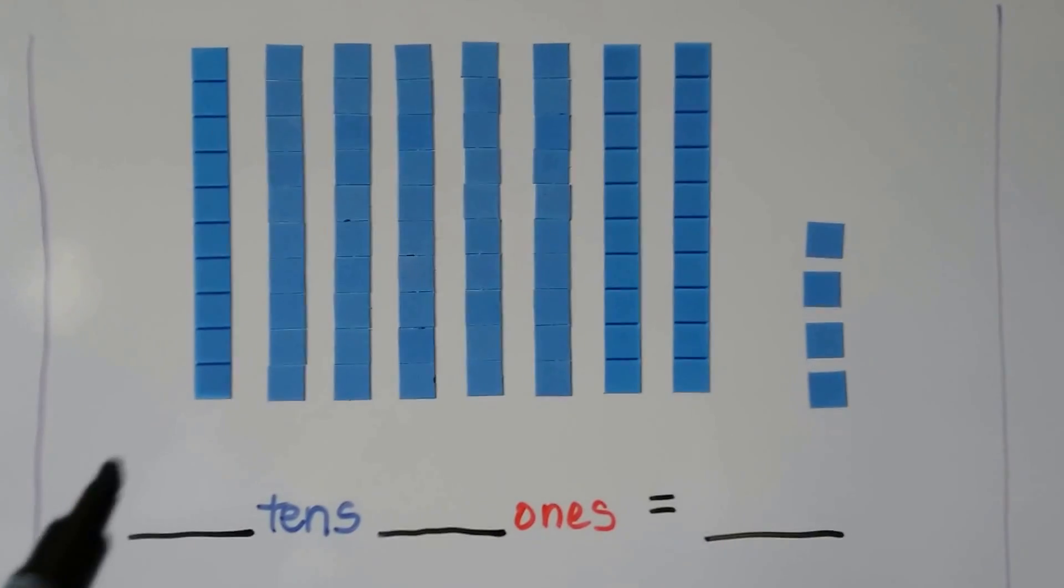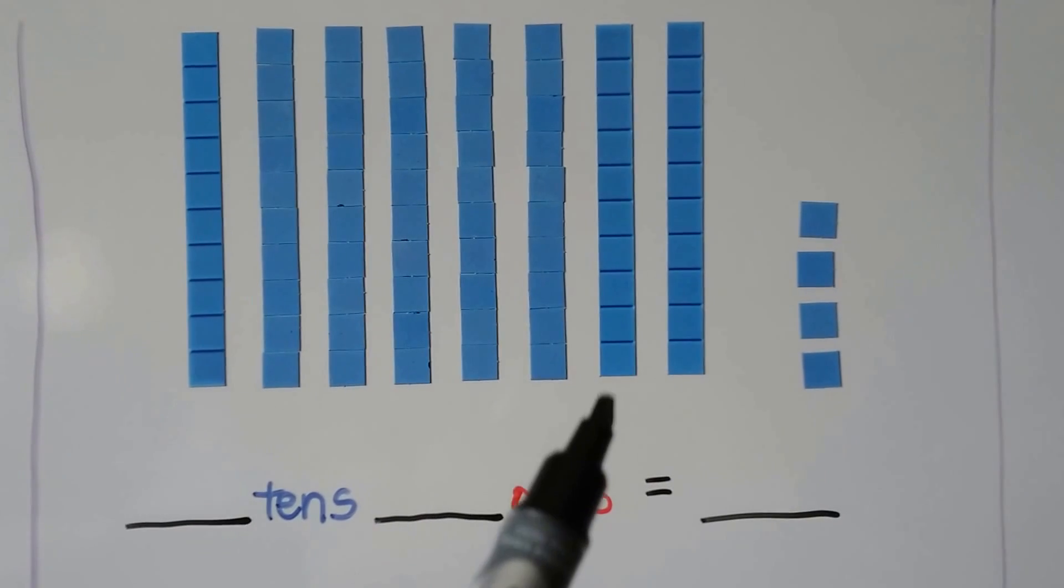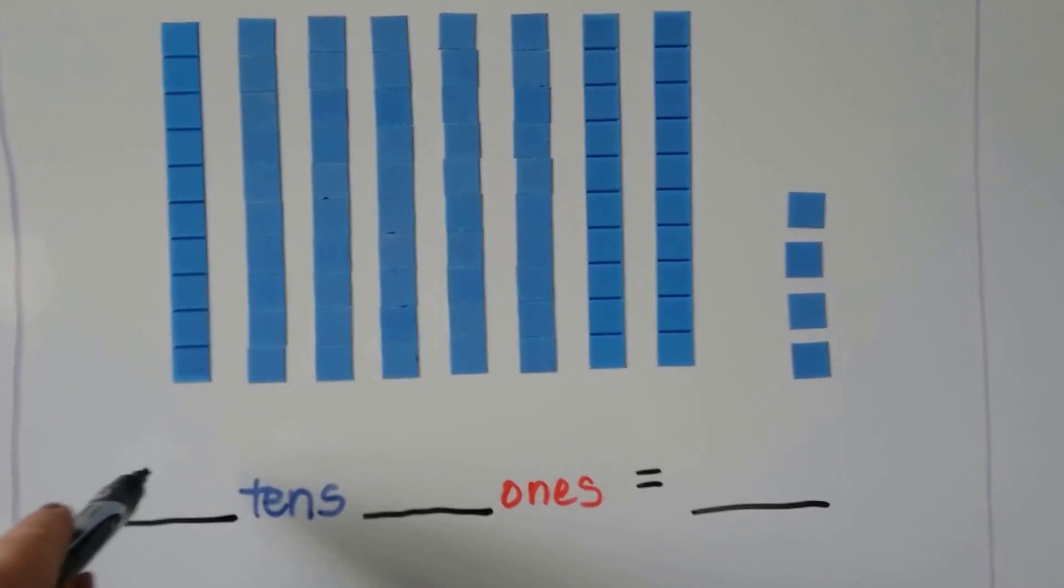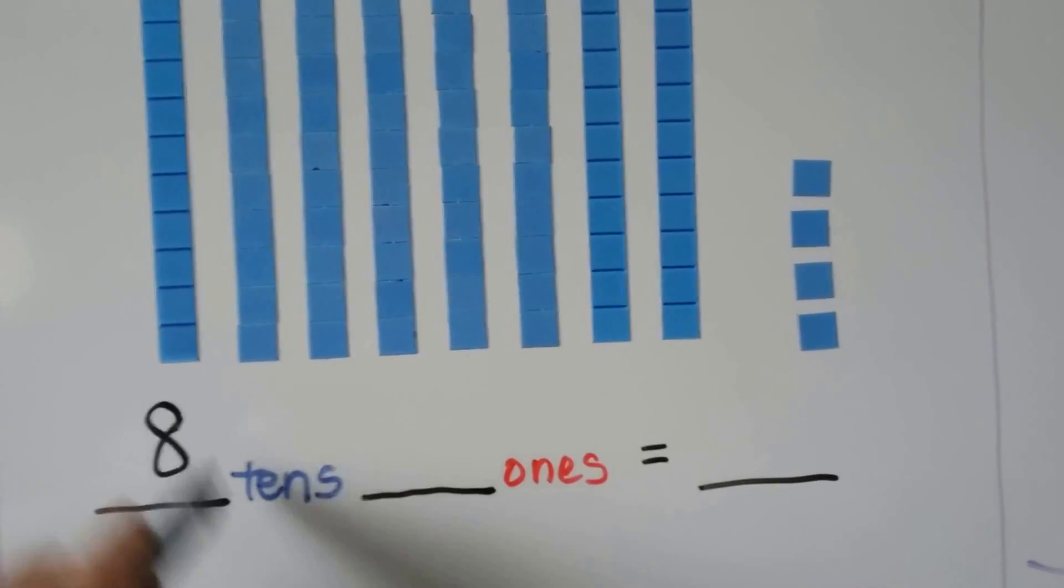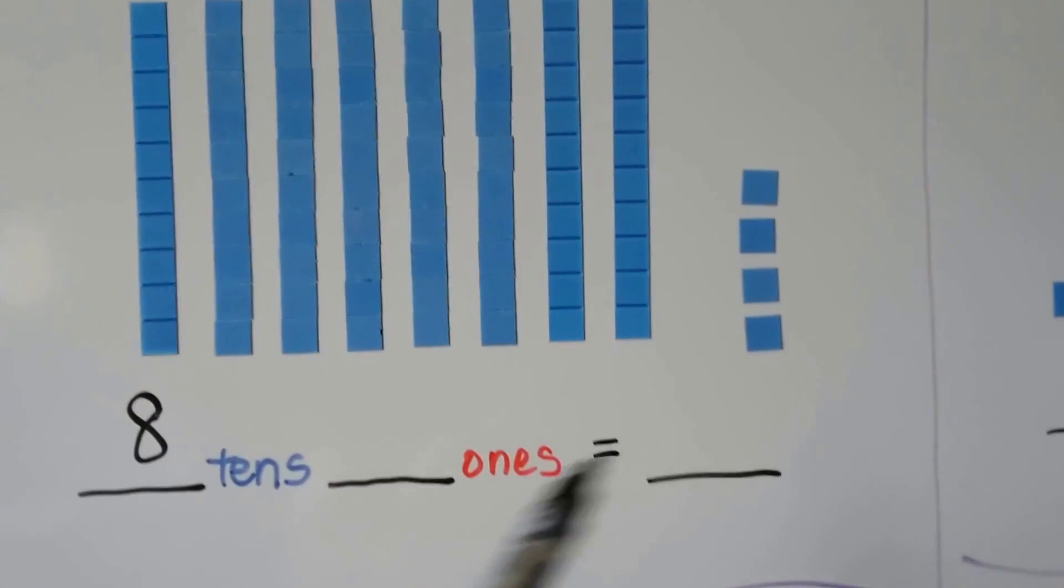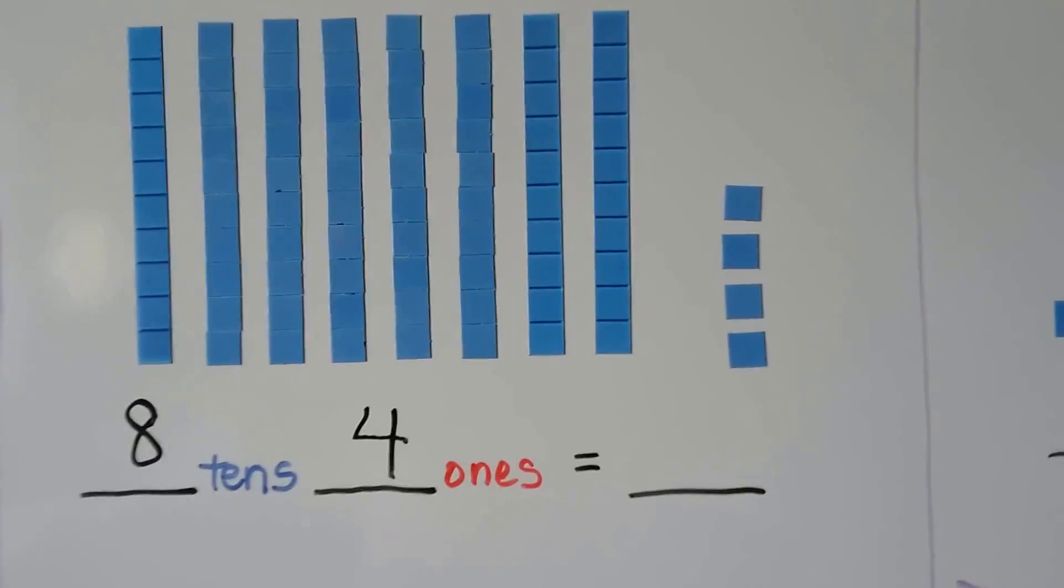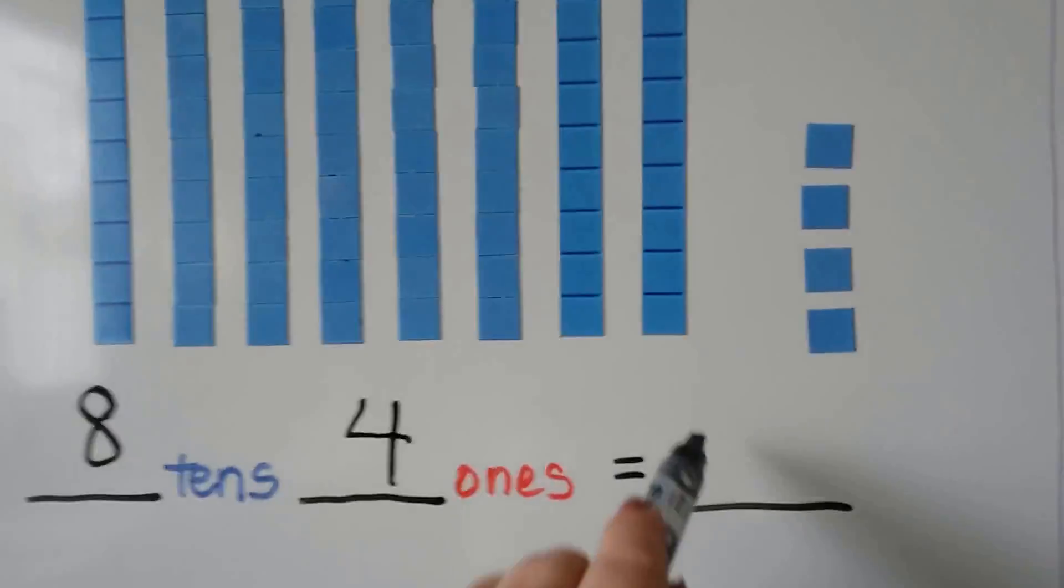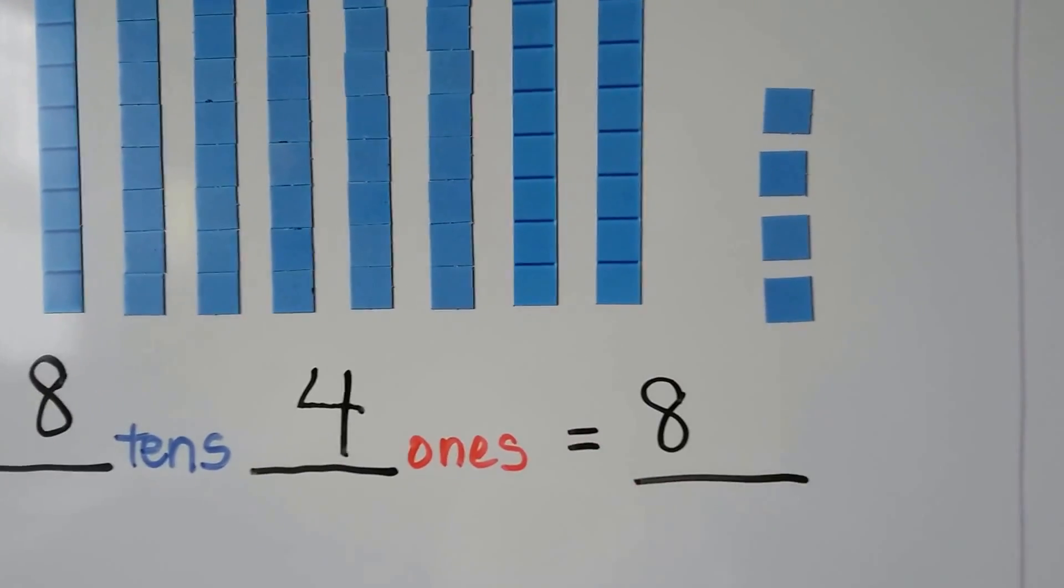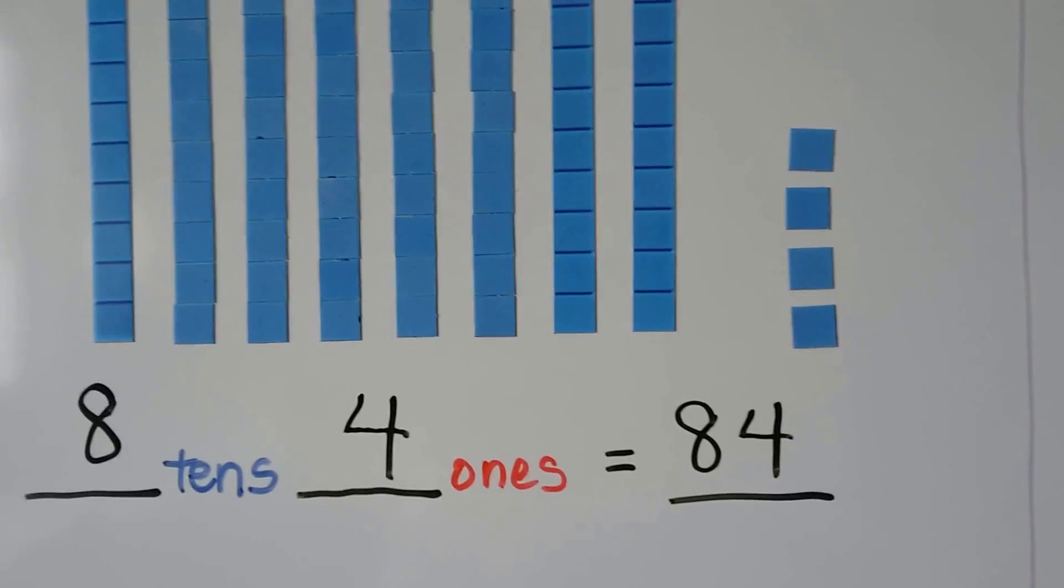We can count the rods of 10. One, 2, 3, 4, 5, 6, 7, 8. There are 8 tens, and there are 1, 2, 3, 4 ones. What number do we have? We write the 8 in the tens place. We write the 4 in the ones place. We have 84.